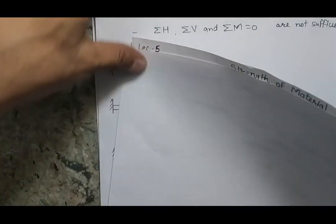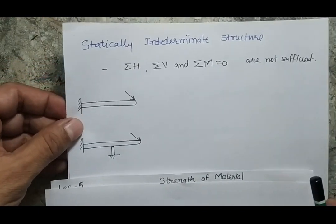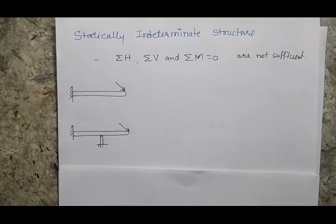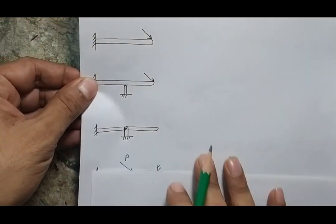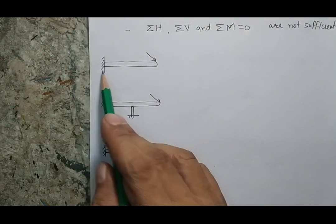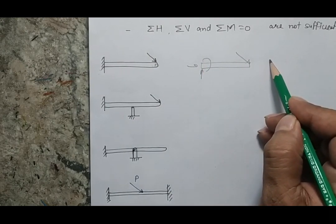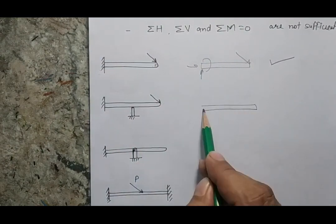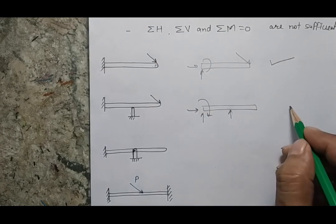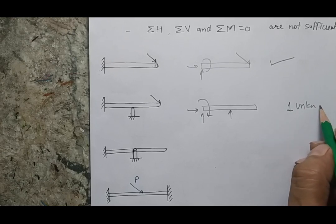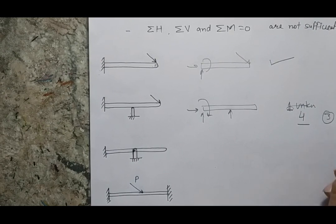By definition, any structure for which we cannot get all the unknowns using only the laws of statics — and we need more equations — is called a statically indeterminate structure. For example: a cantilever beam with only a point force has three unknowns from the fixed joint, so it is statically determinate. When an additional support is added, there are four unknowns but only three equations, giving a degree of indeterminacy of one — meaning one unknown remains after applying all static equations.